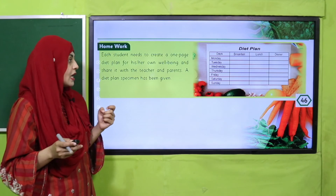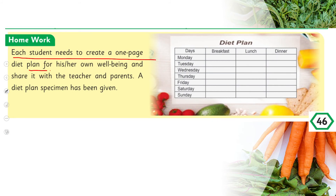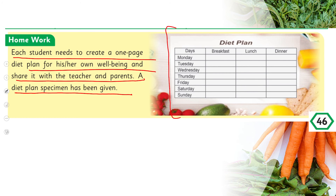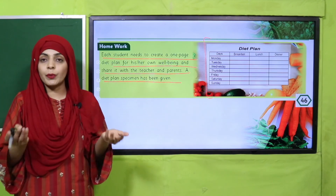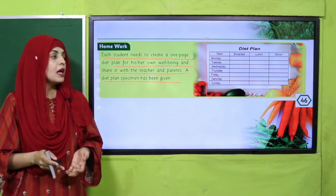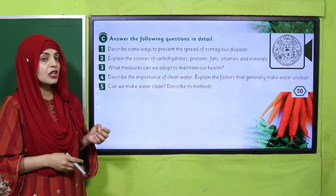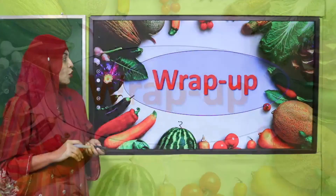Now is the time for homework. On page 46, the home activity requires each student to create a one-page diet plan for their own well-being and share it with their teacher and parents. A specimen diet plan is given. Plan your meals — breakfast, lunch, and dinner — for the whole week from Monday to Sunday. Also, on page 50, complete question number 2 from Section C on vitamins and minerals.